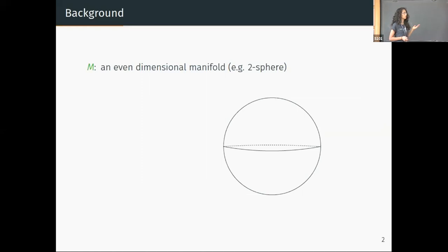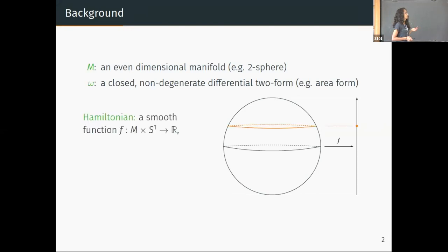These manifolds model the phase space of a mechanical system, so all possible positions and momenta. They are endowed with a special differential form which basically enables you to write the equations of motion in a coordinate-free way.